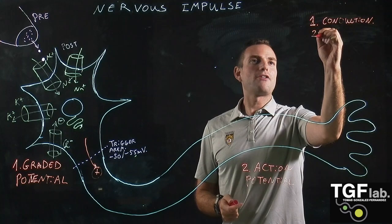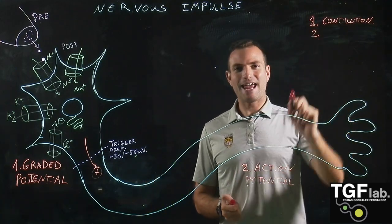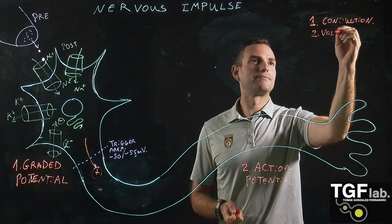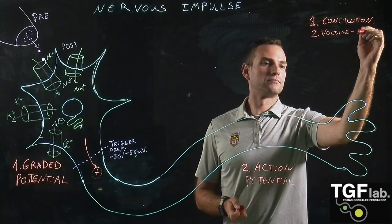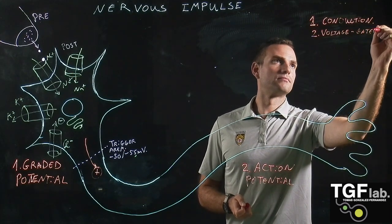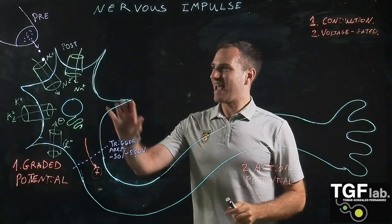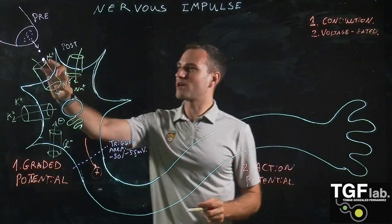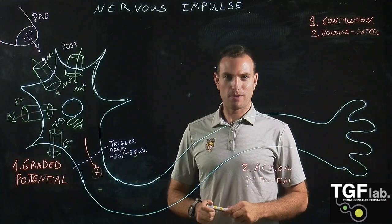The second characteristic, which is different from the graded potential, is that the action potential is mediated by voltage-gated channels. This means that the channels are not going to be controlled by ligands — they are going to be controlled by the changes in the membrane potential.